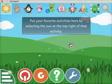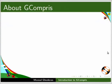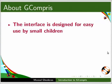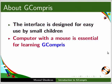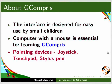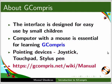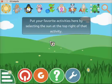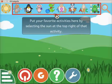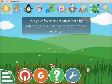Gcompry application opens. The interface is designed for easy use by small children. A computer with a mouse is essential for learning Gcompry. You can also use other pointing devices such as joystick, touchpad, stylus pen, etc. For more information, use the given link. The Gcompry graphic interface is shown here, with a list of activities at the top and a control bar at the bottom.